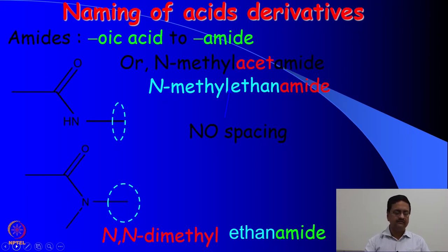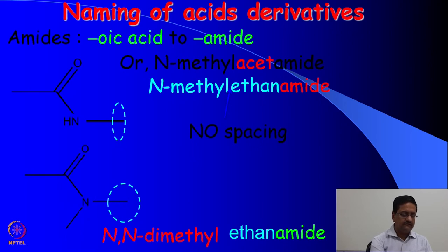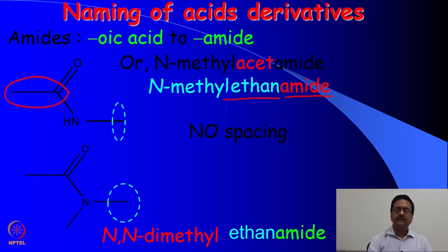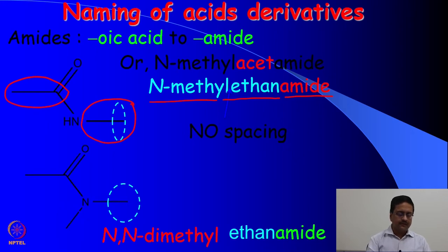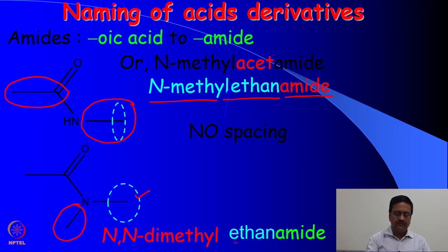The next type of acid derivative is the amide, which is also originated from benzoic acid or any organic acid. With 'oic acid' getting converted to amide, we write the name as 'amide'. In the first example, it is originated from ethanoic acid, so we write it as ethyl amide. Depending on the group present — if there is a methyl group on nitrogen, it is N-methyl. If there are two methyl groups, we write it as N,N-dimethyl ethylamide. This is how one should name the amides.